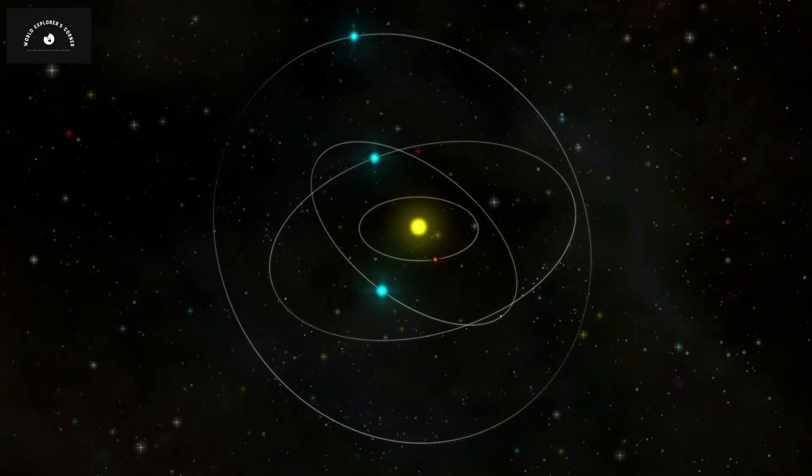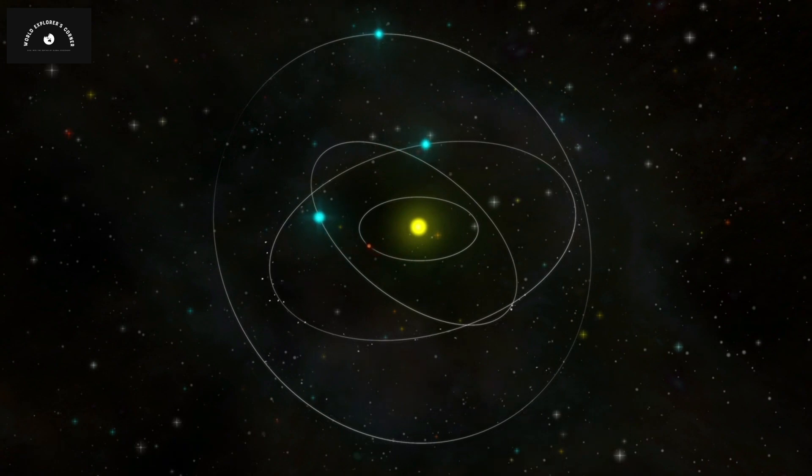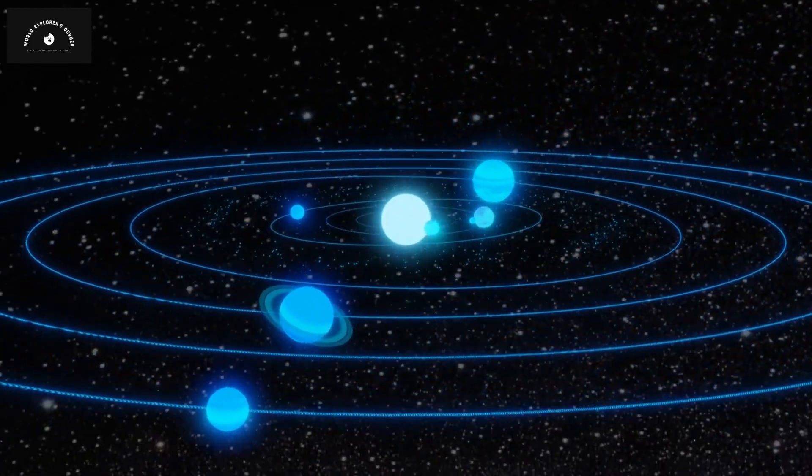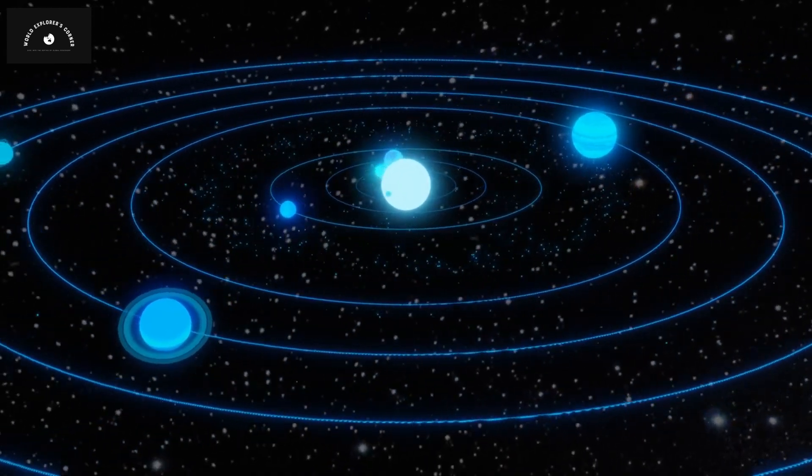The most prominent example is our solar system, where all planets orbit the sun. These planets, being smaller in mass compared to the sun, are drawn towards it, causing them to revolve around it in specific orbits.